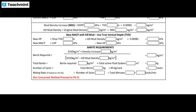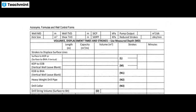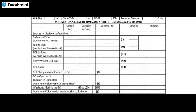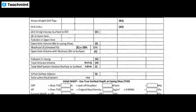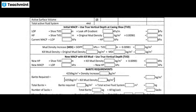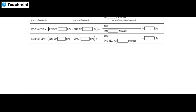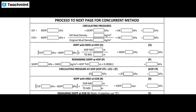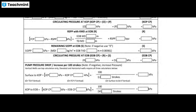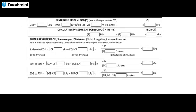This shows the typical volume, displacement, time, and strokes data on the kill sheet. In the concurrent method section you can see ICP, FCP, SADPP, and also remaining SIDPP at KOP and RSPP with KMD at kickoff point — all utilized in the kill sheet. You can also see how annular pressure drop is calculated in the kill sheet.